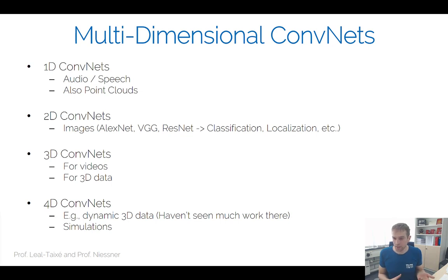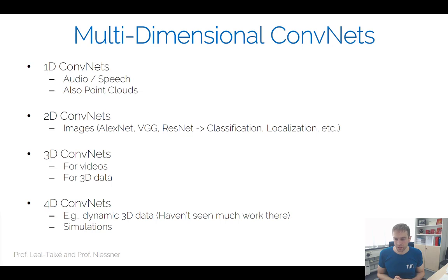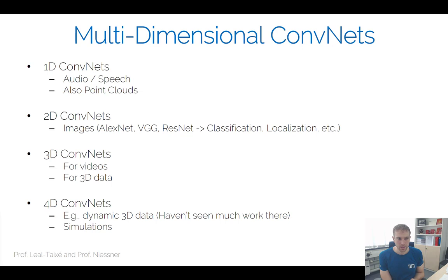For audio and speech, it's very clear — we have samples for every audio signal being generated, something like 16-bit audio signals. The frequency is typically something between 16,000 and 32,000 samples as a standard, and you can process that with a 1D convolution.